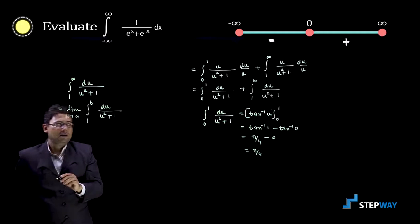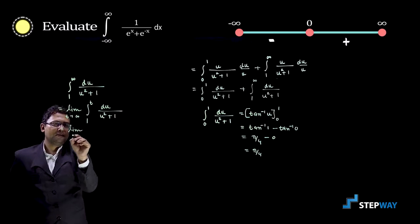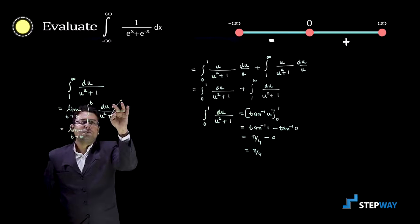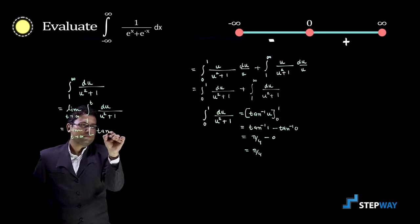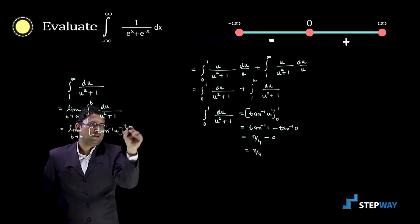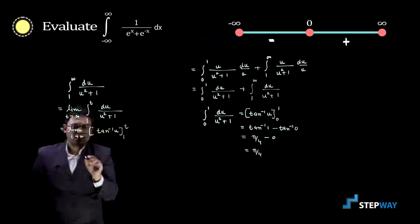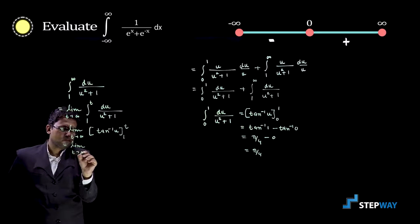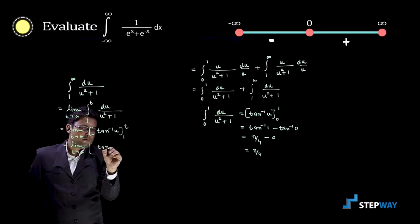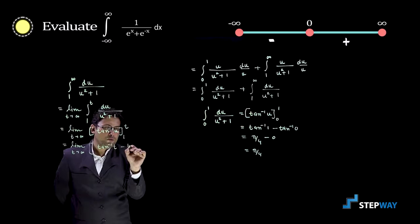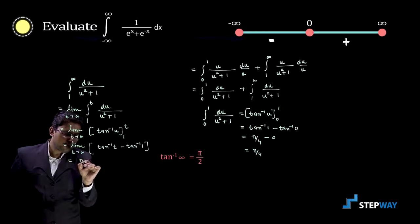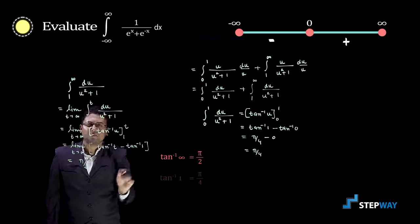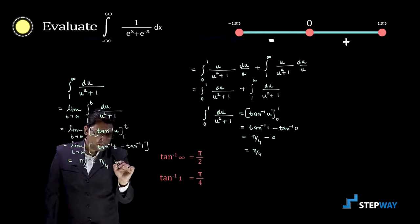We evaluate: limit as t tends to infinite of the integration of 1 upon u squared plus 1, which is tan inverse u, with limits 1 to t. Putting t in place of u gives tan inverse t, and putting 1 gives tan inverse 1. So we have limit as t tends to infinite of tan inverse t minus tan inverse 1. As t tends to infinite, tan inverse t tends to pi by 2, and tan inverse 1 is pi by 4. So the second term equals pi by 2 minus pi by 4, which is pi by 4.